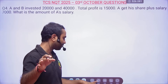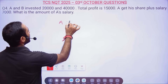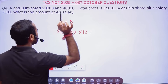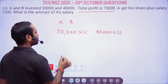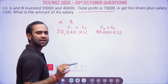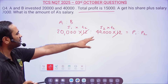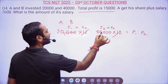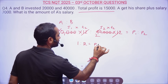Now question 4: A and B invest 20,000 and 40,000 respectively. Time is the same for both. Total profit is 15,000. The investment-to-time ratio equals the profit ratio, and since time is the same it cancels out. So the ratio of profits P1 to P2 = 20,000 : 40,000 = 1 : 2.